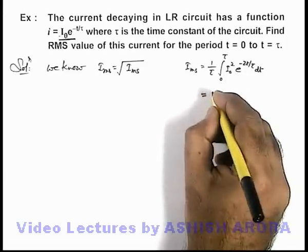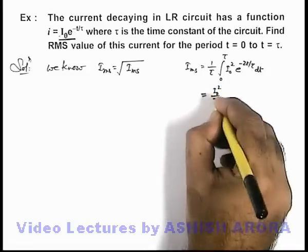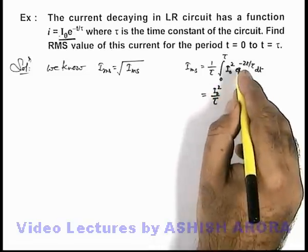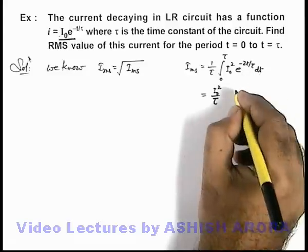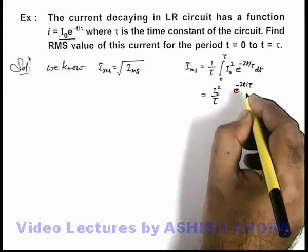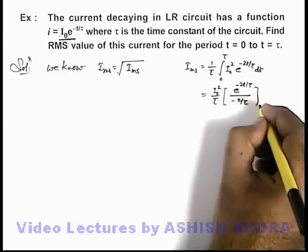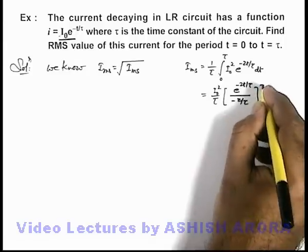So on further processing, this will be i-not square by tau is a constant, and the integral of e to power minus 2t by tau is e to power minus 2t by tau divided by minus 2 by tau, and the limits I'll substitute from zero to tau.